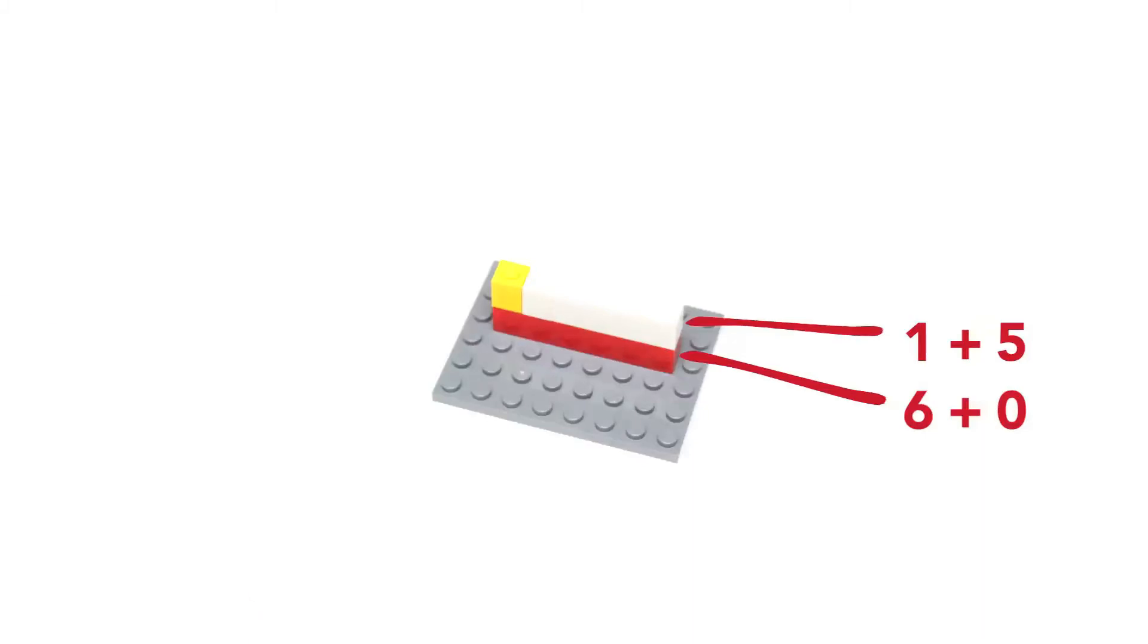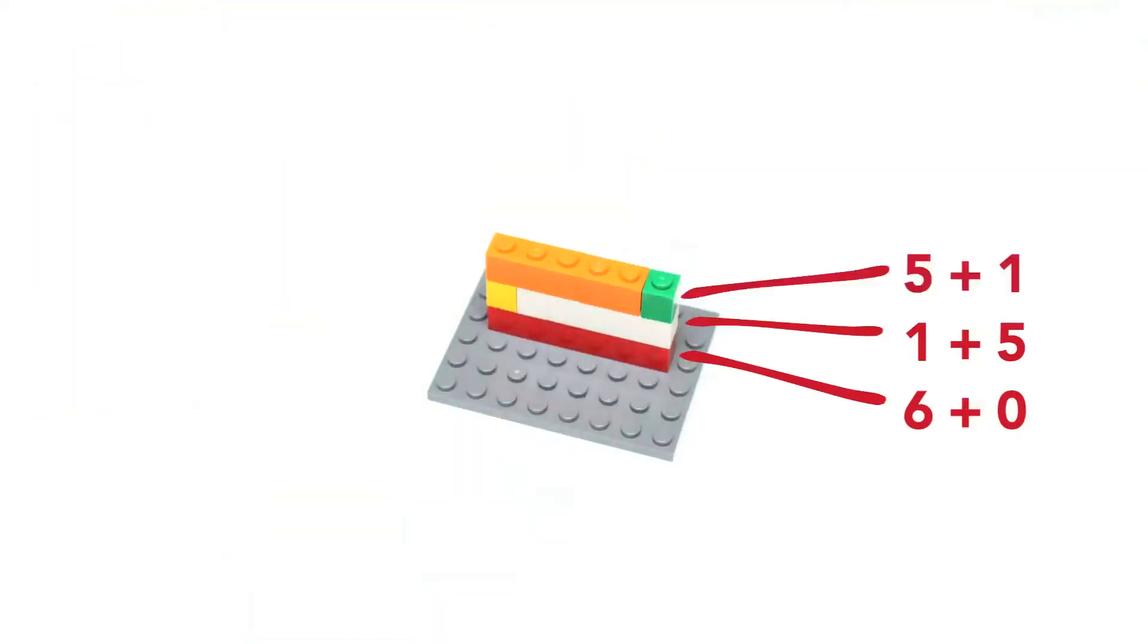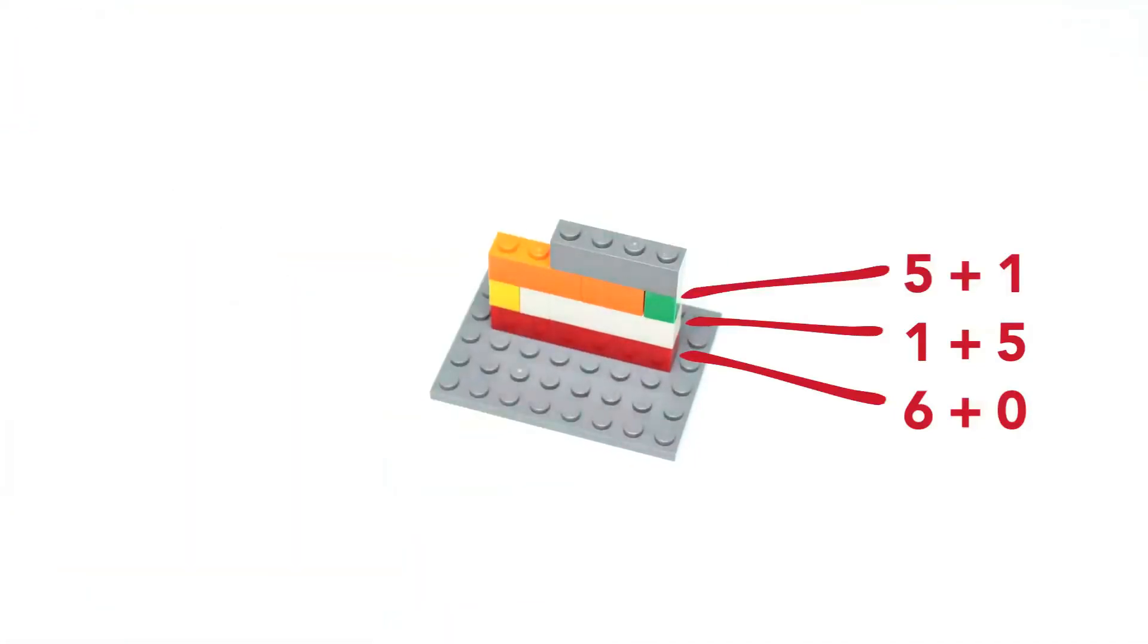Show the next two addends, 5 plus 1, also using different colored bricks. Stack the bricks showing 5 plus 1 on top of the model 1 plus 5.